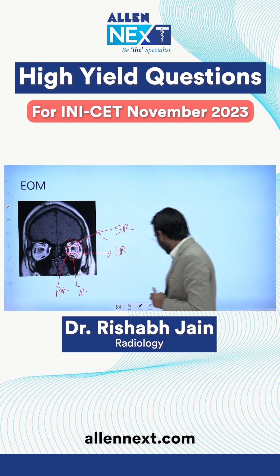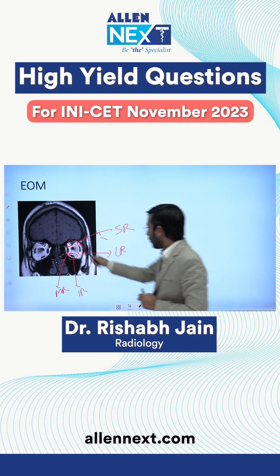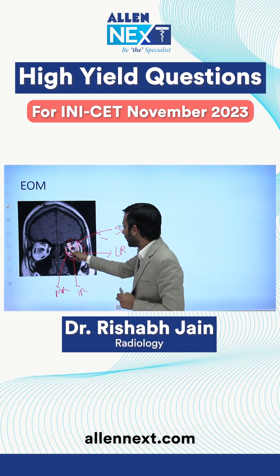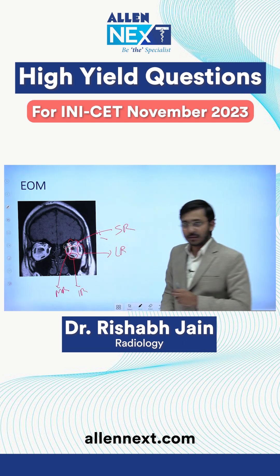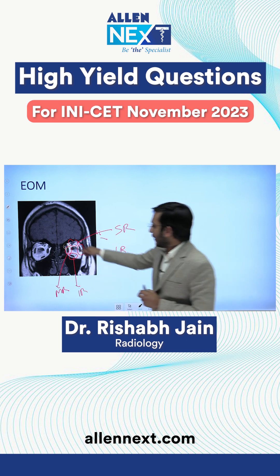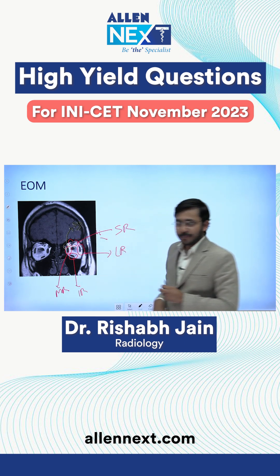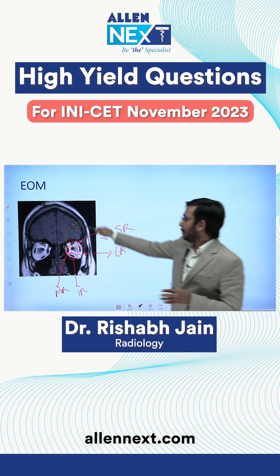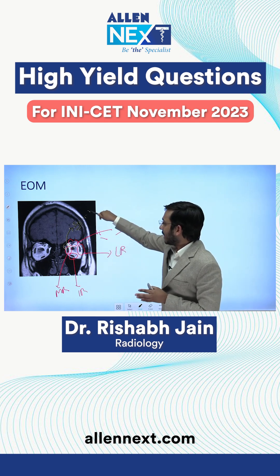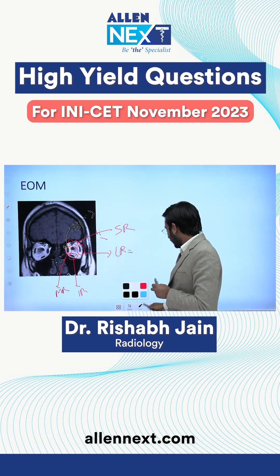Now, which is this small 'C'-shaped muscle that I am labeling here? This is the superior oblique muscle. We know the superior oblique is supplied by the fourth cranial nerve, and the lateral rectus...